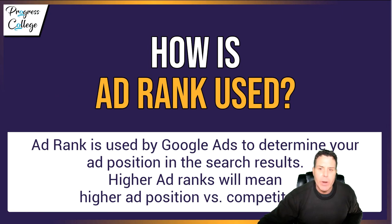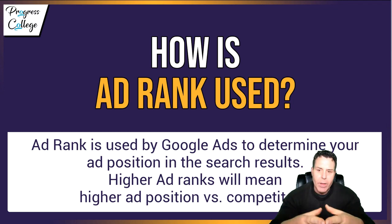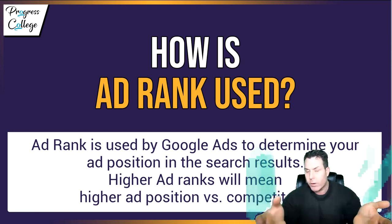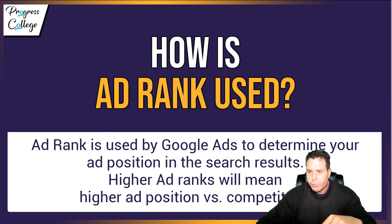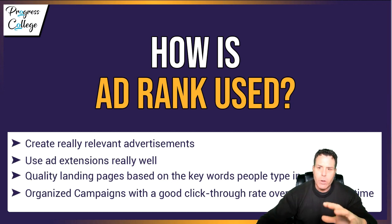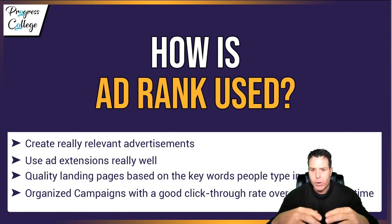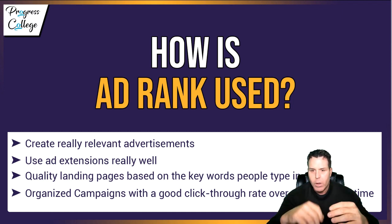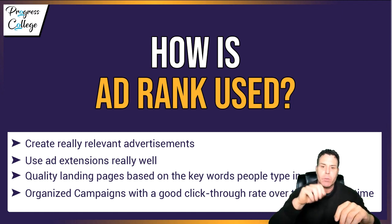So how is ad rank used? Ad rank is used by Google to determine the ad position in the search results. The higher the ad rank, the higher the ad position versus your competitors. If you have a higher ad rank, you're going to do better against your competitors — you're going to end up paying less and getting a better spot. You want to create really relevant advertisements. If I did Las Vegas plumbers as an example, you want to make sure you have an ad that actually talks about Las Vegas plumbers.